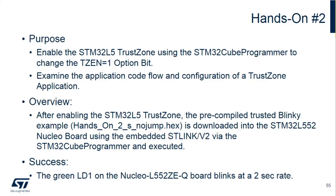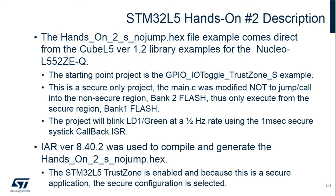The first thing we're going to do is enable the TrustZone, then we're going to download a secure-only application — there's no call to a non-secure application. We'll examine the flow of how to set up the secure application up to the jump, which we're not going to make. There are three LEDs on the Nucleo board: the green LED is the secure toggle, the blue LED is toggled by the non-secure, and the red LED is the fault. The hands-on number two source comes directly from the GPIO toggle TrustZone example.